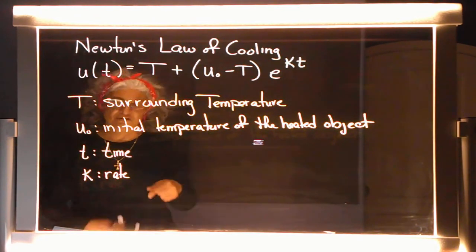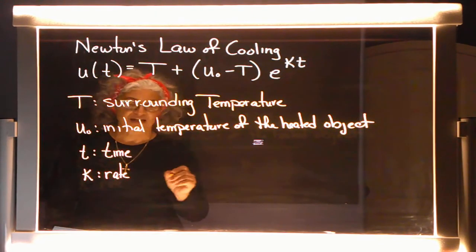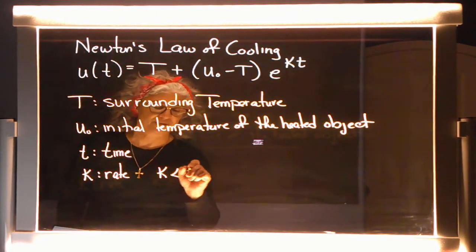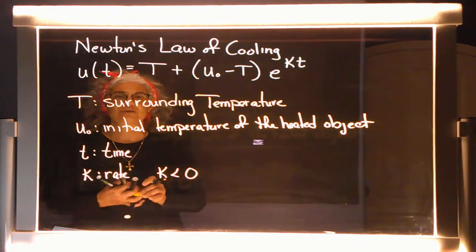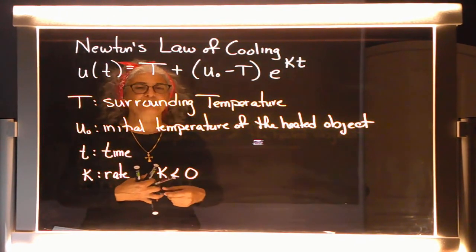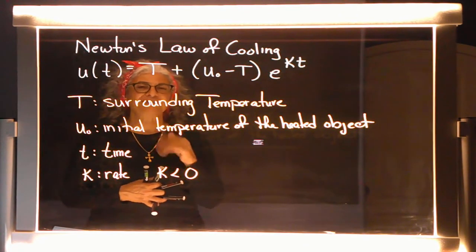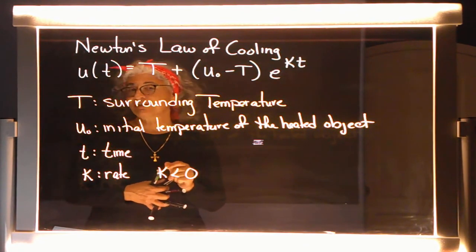Now, since this is the Law of Cooling, you know that the rate has got to be negative because it's a law of cooling. Okay, so hang in there. I got a couple of examples for us. One's a pizza oven example, and the next one is a very interesting real-life example.